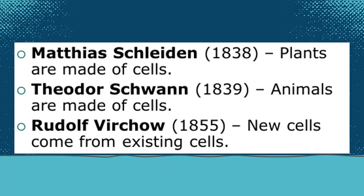In 1836, Theodor Schwann and Matthew Schleiden proposed the cell theory, which holds that: 1. The cell is the unit of structure, physiology, and organization in living things. 2. The cell retains a dual existence as a distinct entity and a building block in the construction of organisms. 3. Cells form by free cell formation or spontaneous generation.